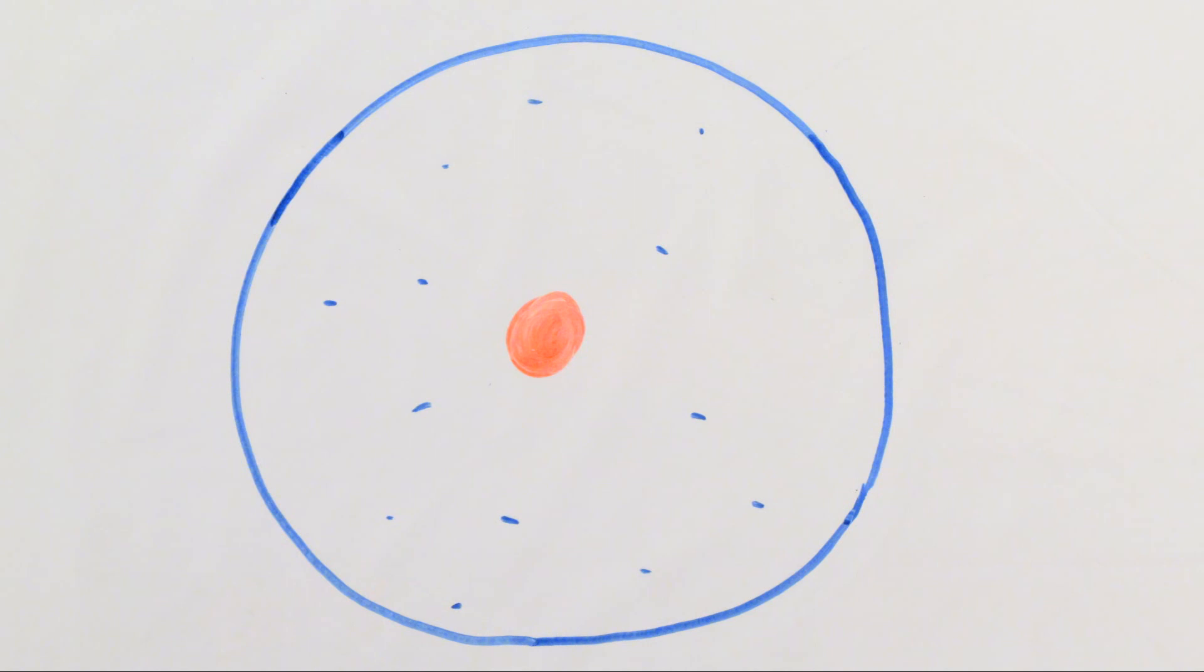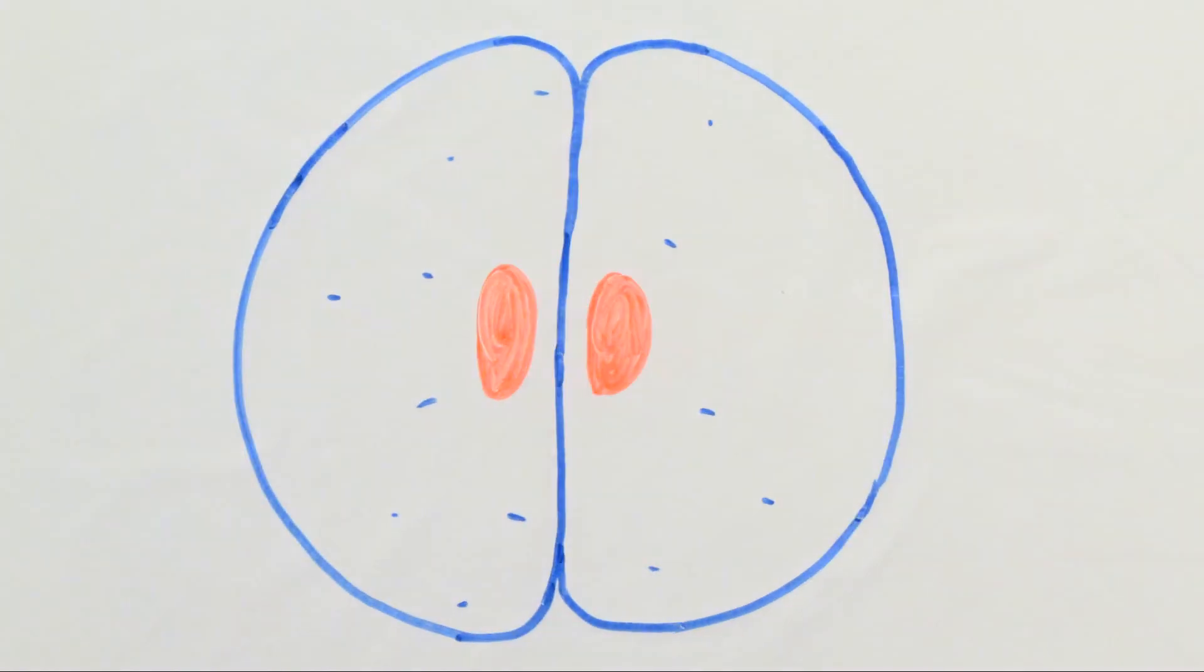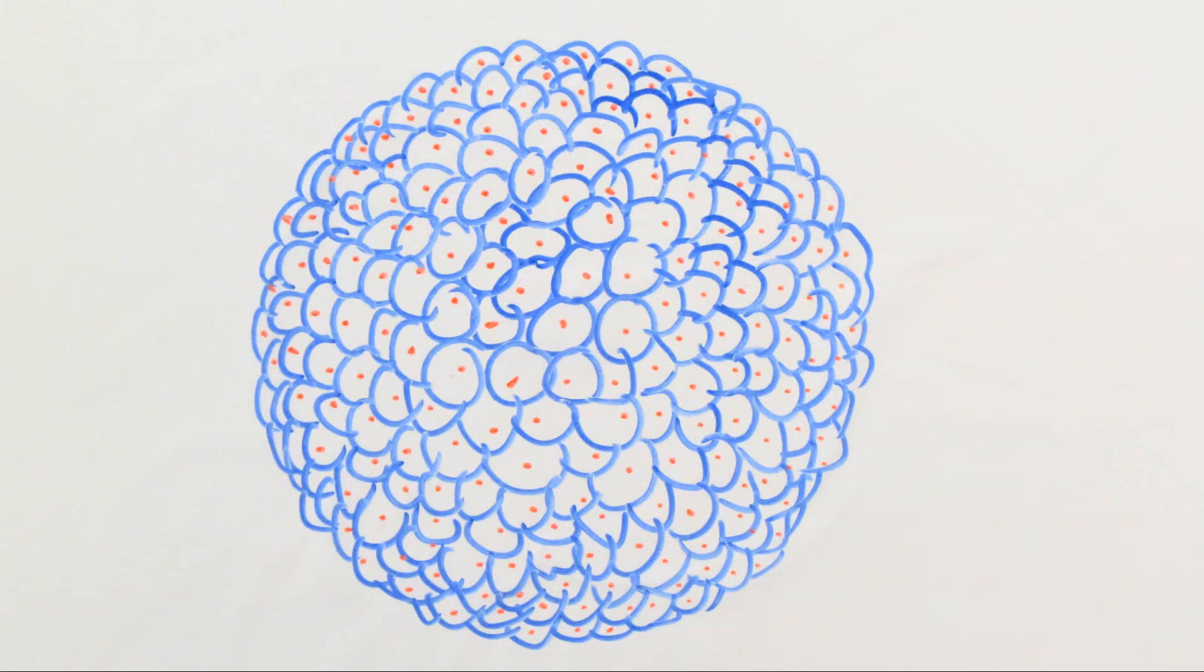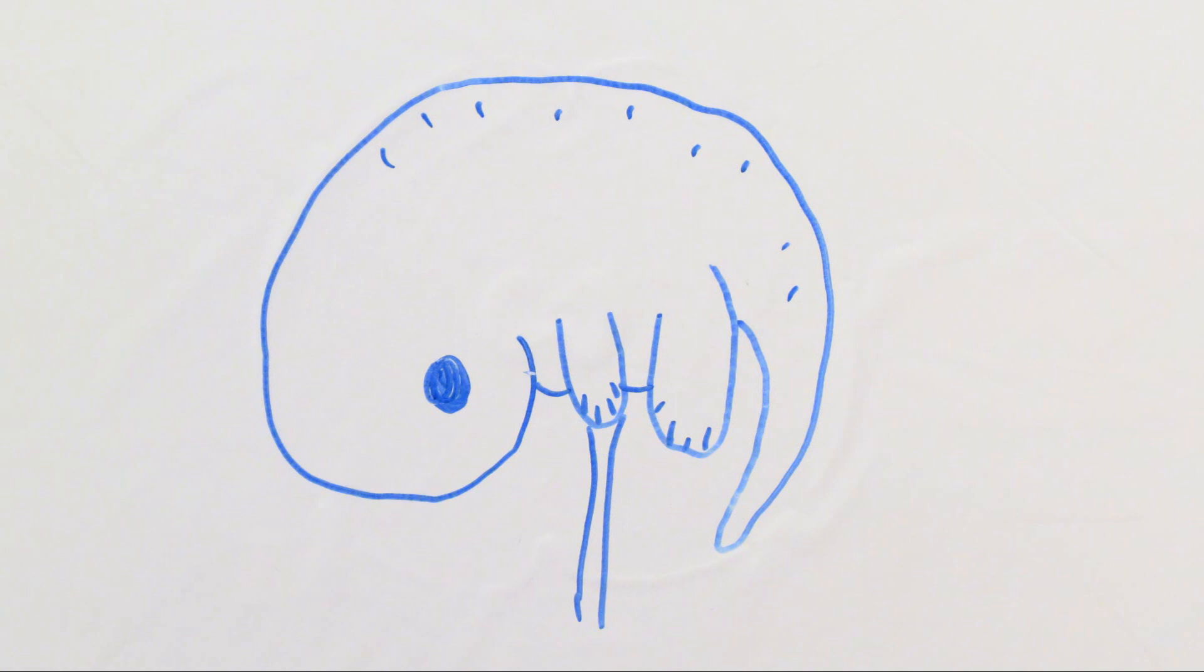The unfertilized egg cell now contains a complete copy of the DNA of the animal which we want to clone. A small electrical current is then applied and this starts the egg cell dividing just like a normally fertilized egg cell and that egg cell will then steadily develop into an embryo and then a fetus which is genetically identical to the animal we're trying to clone.